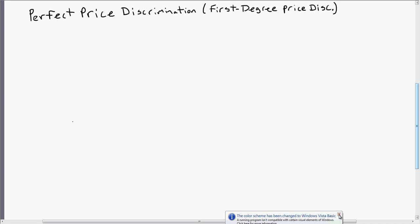So in this video, I am going to provide a few numerical examples looking at perfect price discrimination, which is sometimes known as first-degree price discrimination.